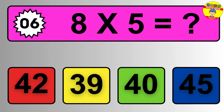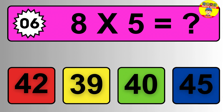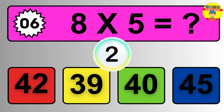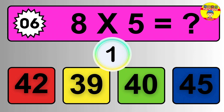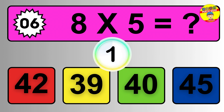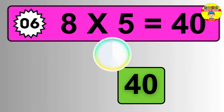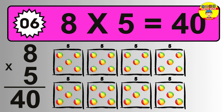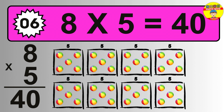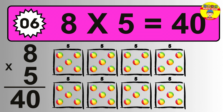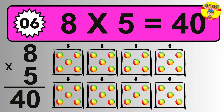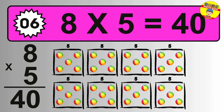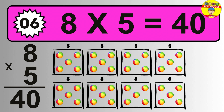Question six: eight times five equals what? The answer is eight times five is forty. To calculate, we have eight groups with five balls each. So how many balls do we have? Forty balls.